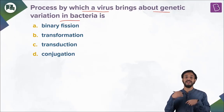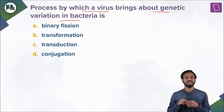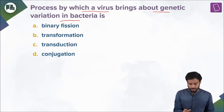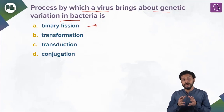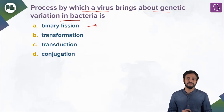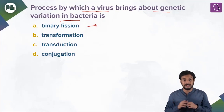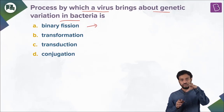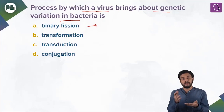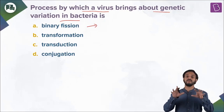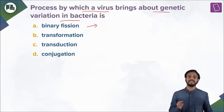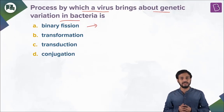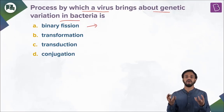Let us take this opportunity to learn some new concepts. Binary fission — it's a simple technique through which one bacterial cell divides into two daughter cells. The contents of the parent cell are replicated and then divided equally into two identical daughter cells. This is a form of reproduction seen in unicellular organisms like bacteria.